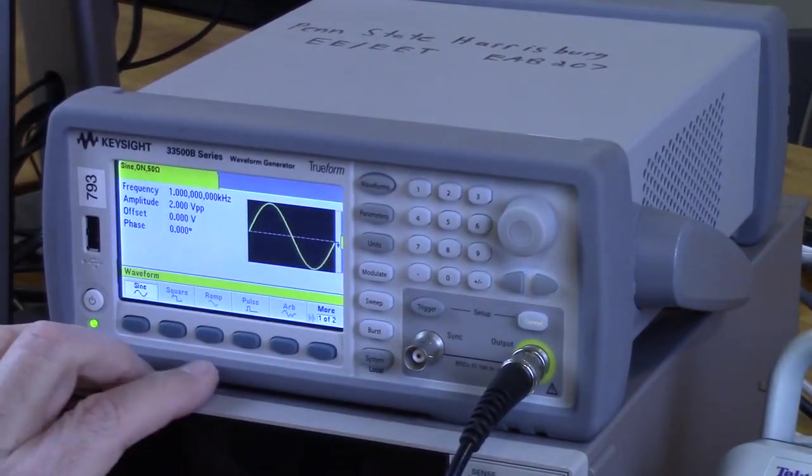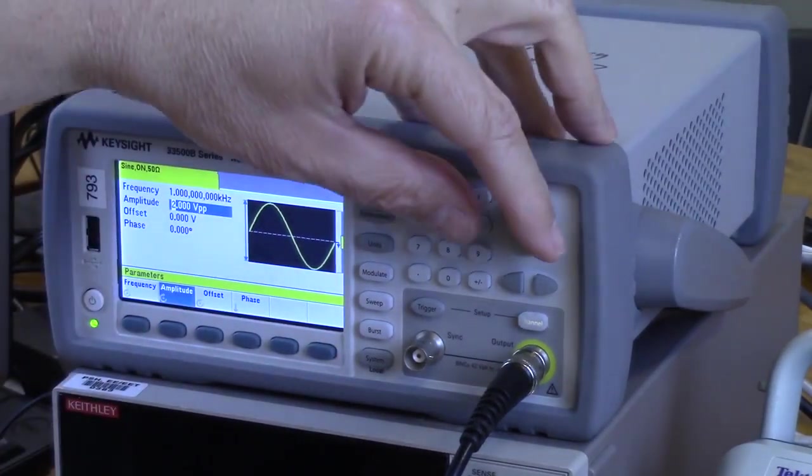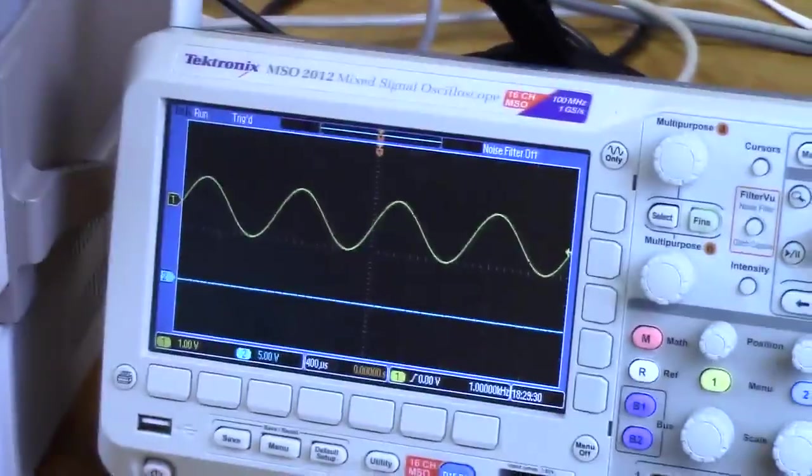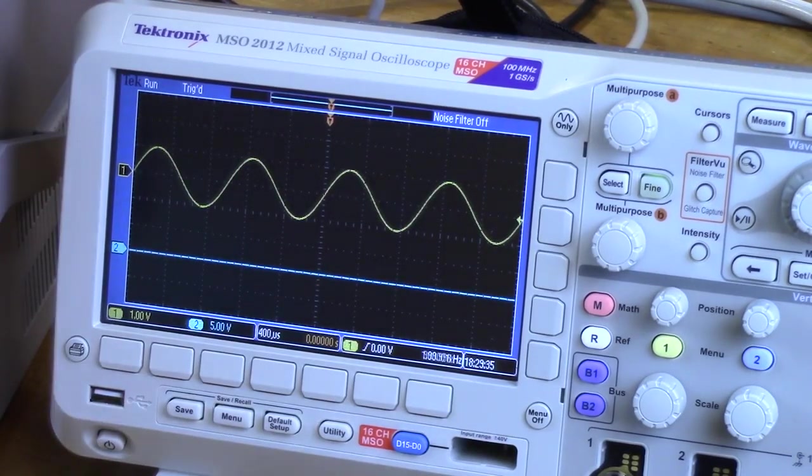So we can go back to waveforms. Waveforms, sine. Or sorry, parameters. Parameters. Amplitude. Change that to one. Much better. Two volts peak to peak. That's good. That's our input wave. And the output is still on because the wave is still there.